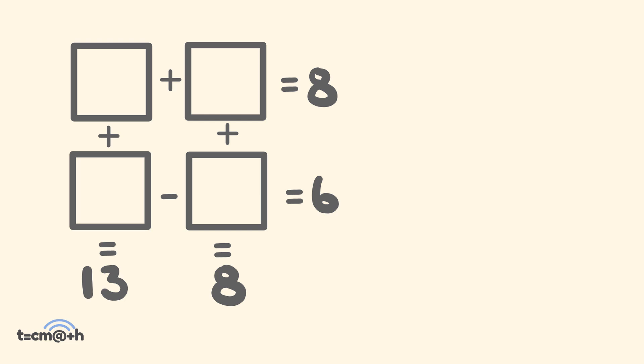So how can we solve this problem? First off, let's label these four unknown numbers to help us out. We'll call this one A, this one B, this one C, and this one D.